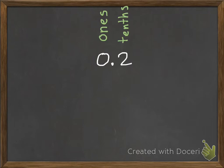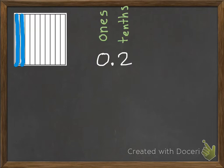If I was to draw a model of two tenths, it would look like this. I have ten parts that equal a whole, and I have two of those.